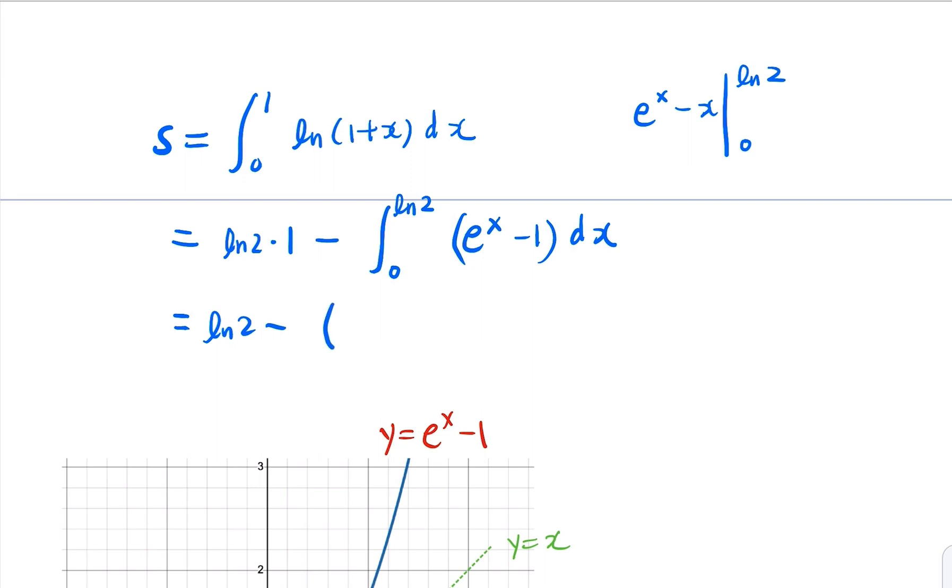So that's going to be 2 minus log 2. And then for 0, e to x to 0 is going to be 1, minus 0 is going to be 1, so minus 1.